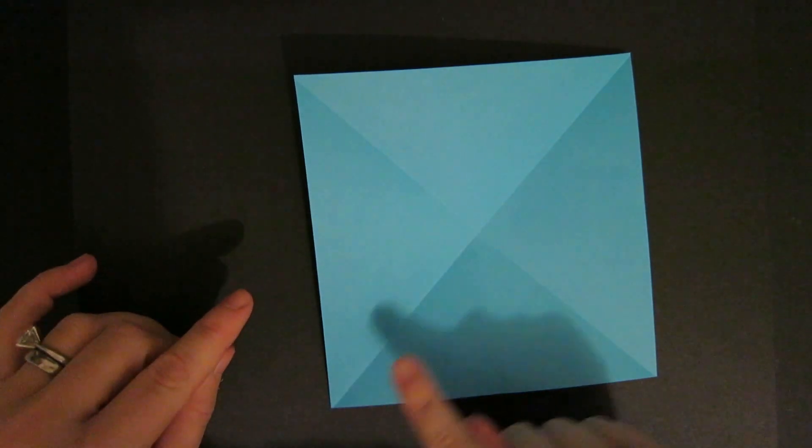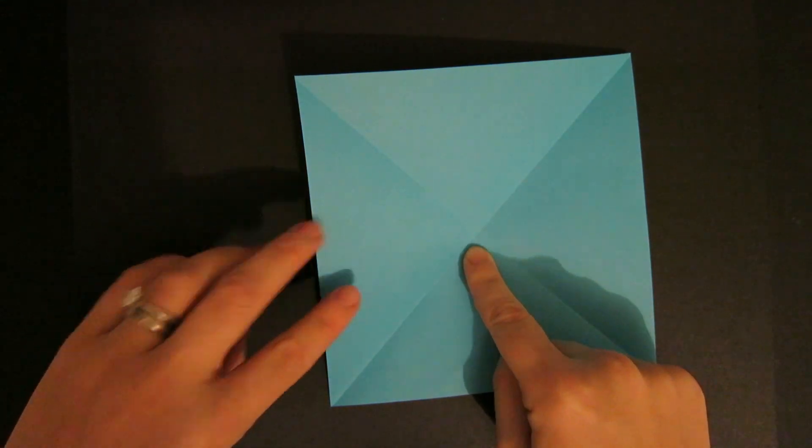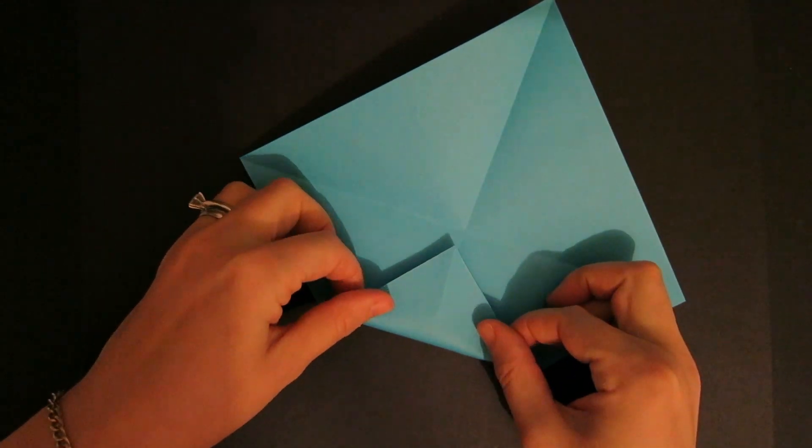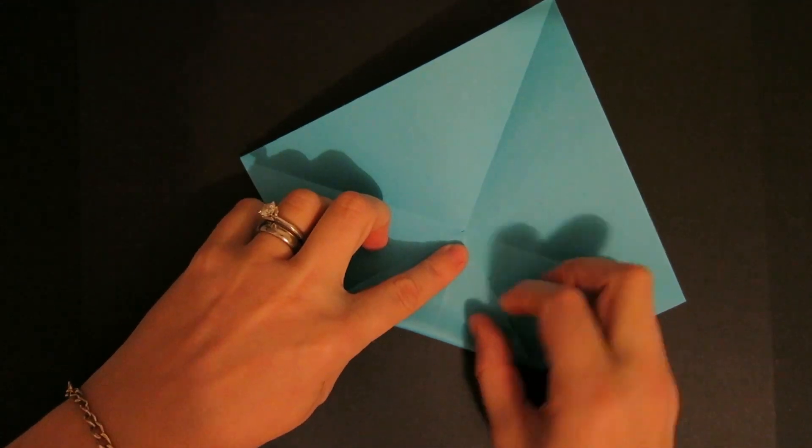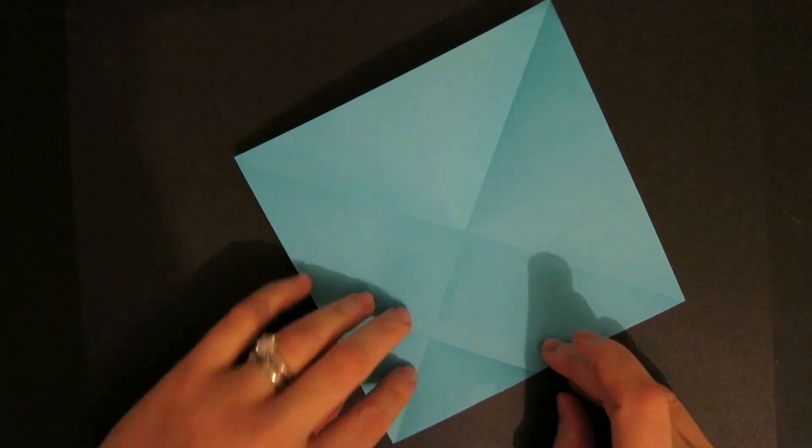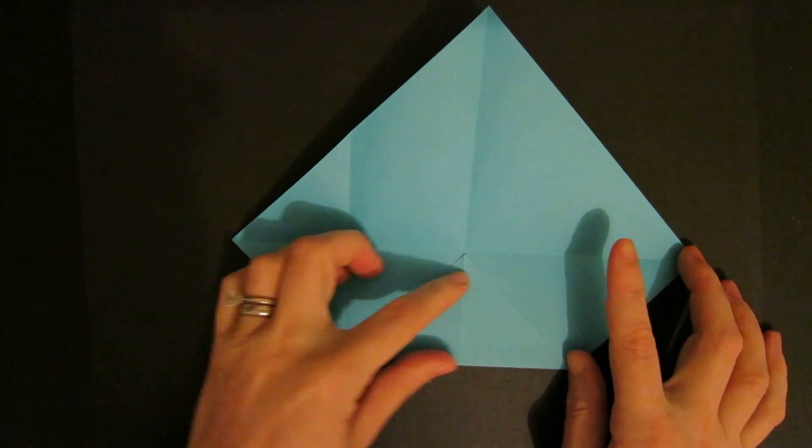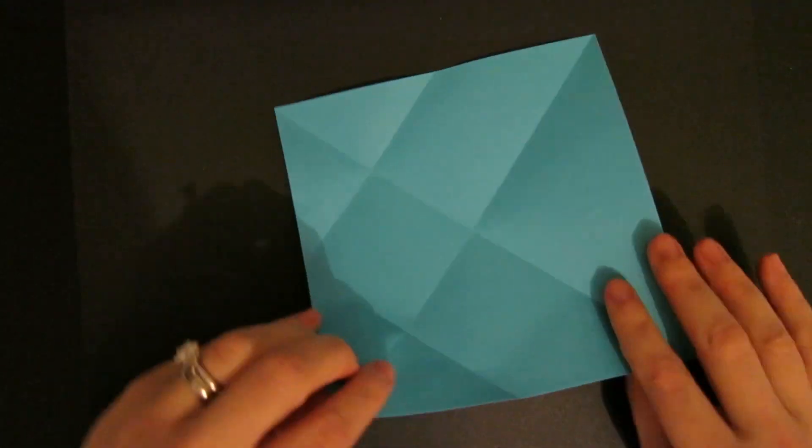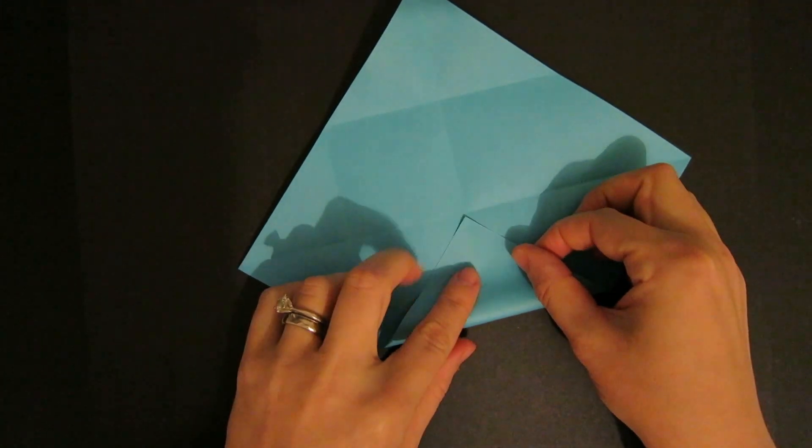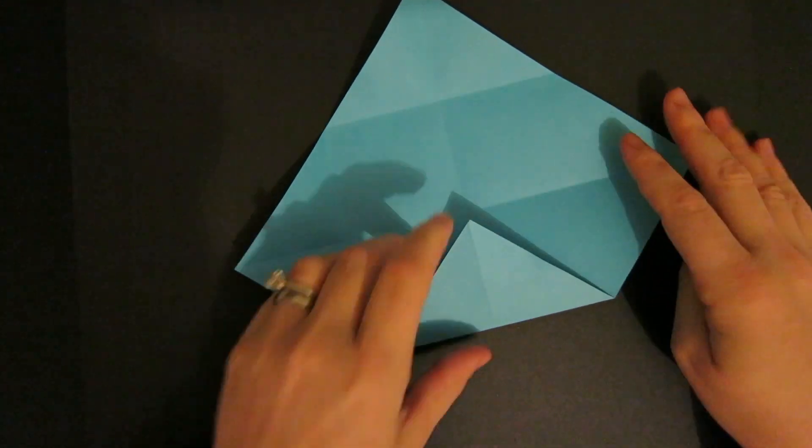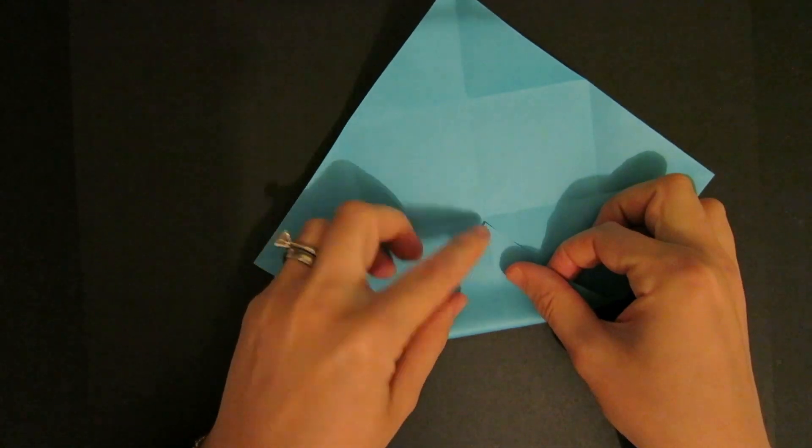You're now going to take each corner and fold it into the middle and crease each time opening the fold again. So just like that and turn and fold and crease and turn and so on until you've done all four corners into the middle and crease.